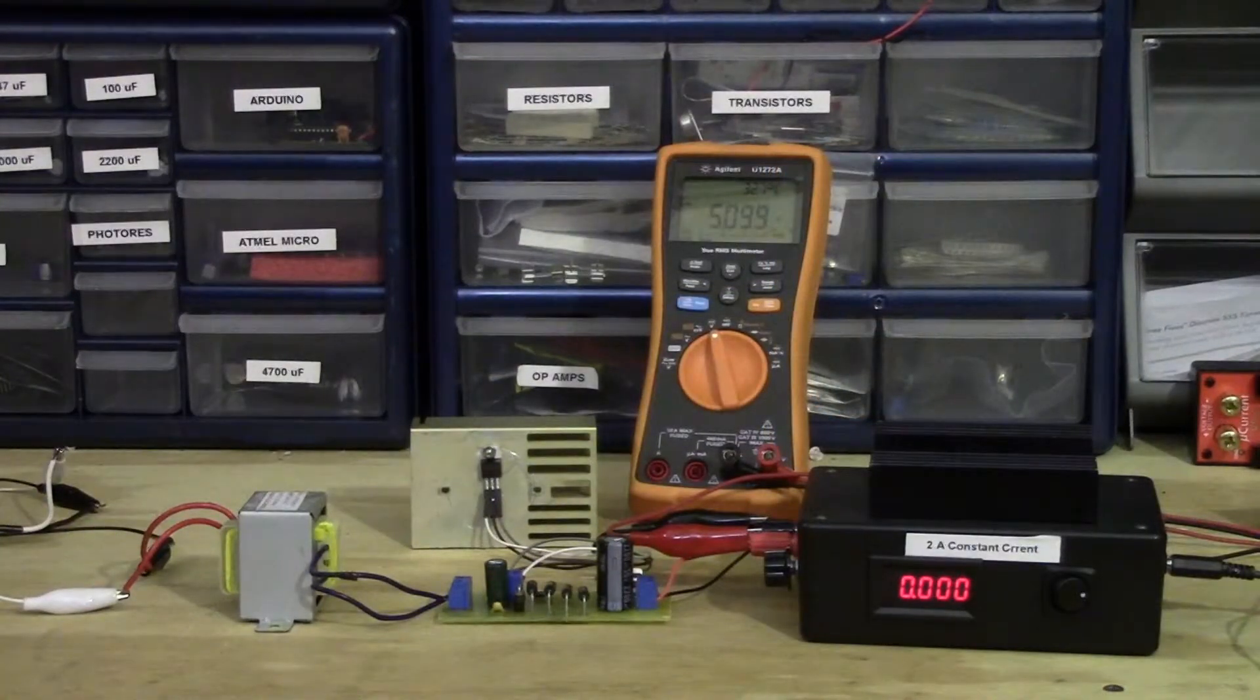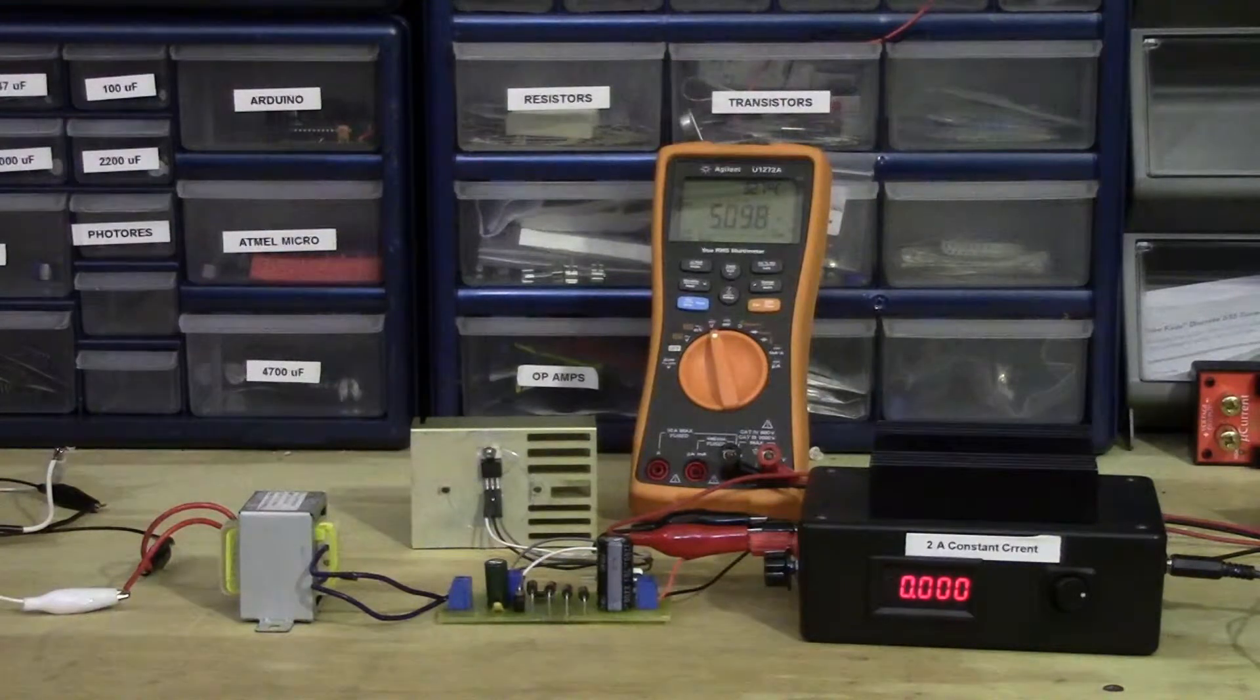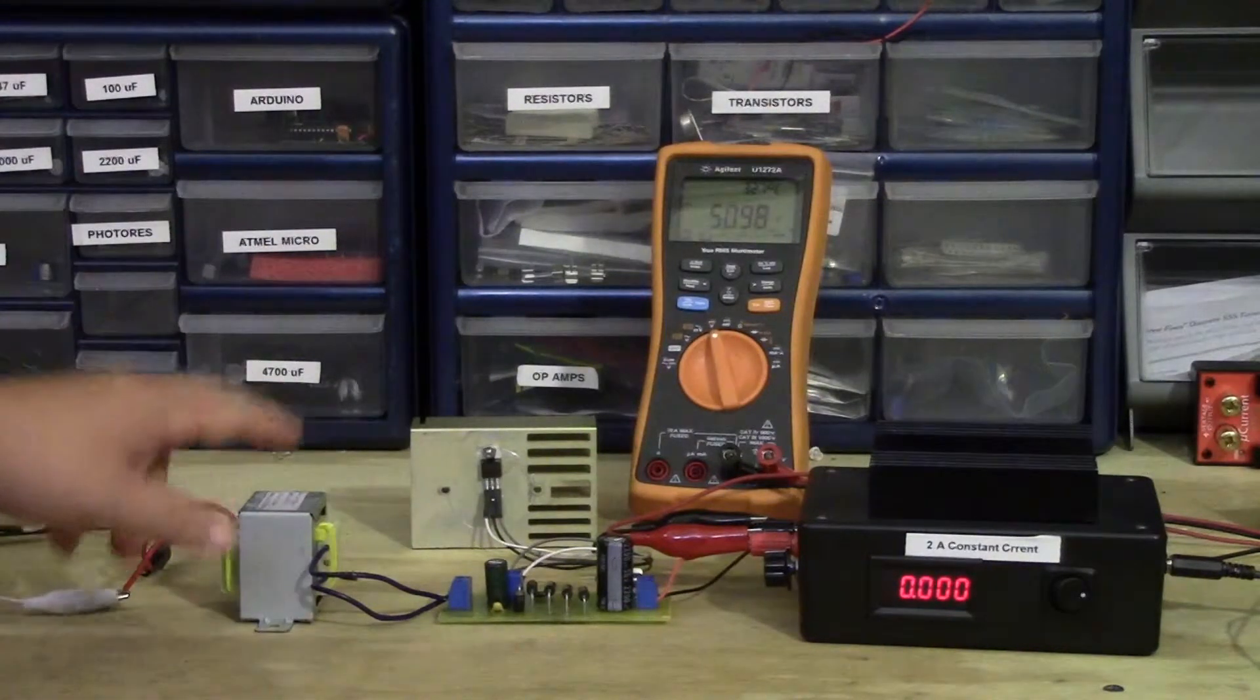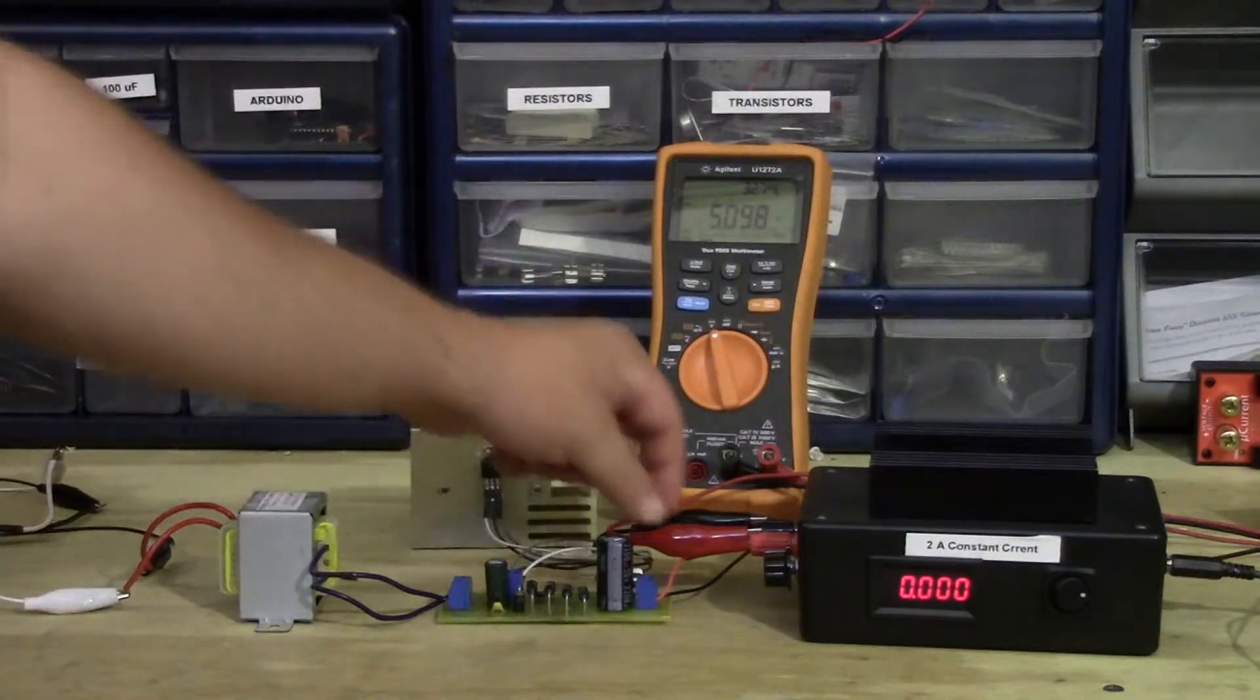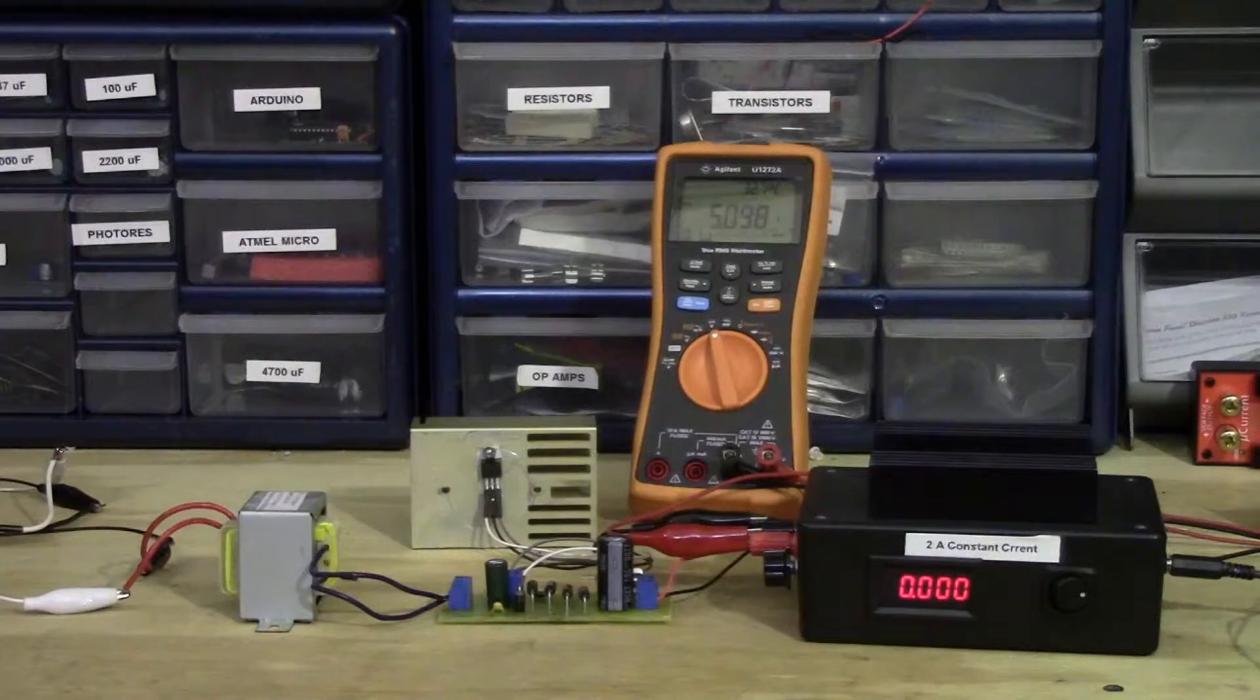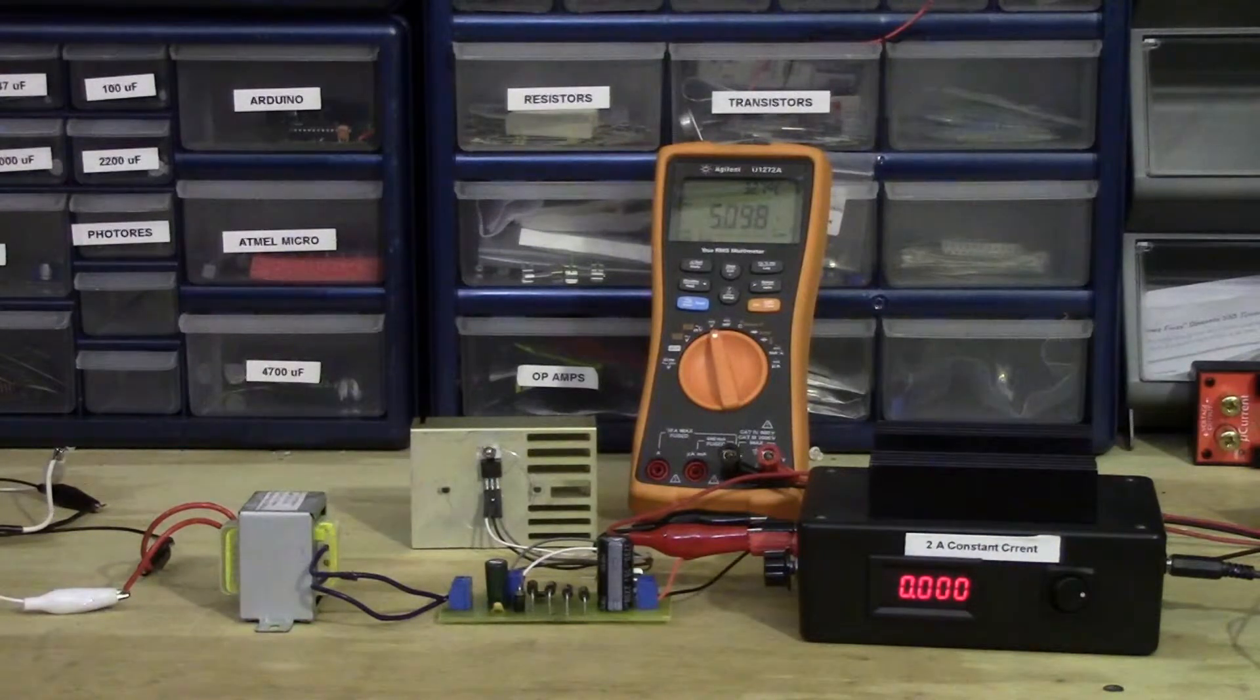The first thing I want to take a look at is our output voltage. So with the main transformer turned on, I've got the Agilent multimeter connected to the output and with no load, we're at 5.09 volts.